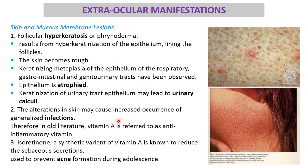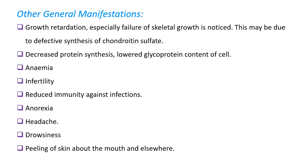Other general manifestations include growth retardation, decreased synthesis of protein — especially glycoprotein — and lower chondroitin sulfate synthesis, causing hampered skeletal growth. There may be anemia due to impaired differentiation of leukocytes, and infertility due to the role of vitamin A in reproductive tissue. Low-grade vitamin A deficiency commonly presents with anorexia, headache, drowsiness, reduced immunity, and peeling of skin around the mouth.